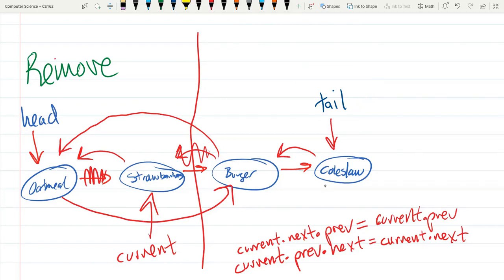If your index is smaller than half, start at the head and move next or move forwards.